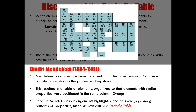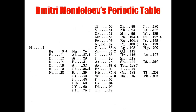Within 15 years, many of his missing elements were discovered, conforming to the basic characteristics that Mendeleev had recorded. It was the accuracy of his predictions that led to the broad acceptance of his periodic table by the scientific community. This is a typed version of Dmitry Mendeleev's periodic table. You can see how he organized the elements into columns by increasing atomic mass. You can also see the elements he predicted indicated by question marks.